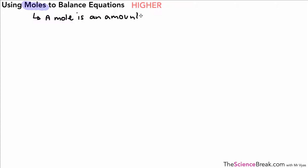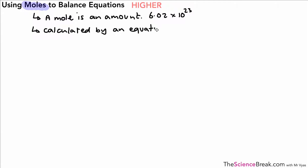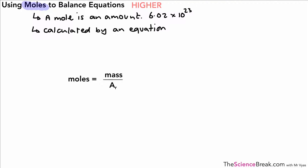Just by way of a recap for this higher tier video: remember, a mole is an amount, and that amount we need to know is exactly 6.02 times 10 to the 23. We can also calculate moles using an equation: number of moles equals mass divided by relative atomic mass, where Ar stands for relative atomic mass.